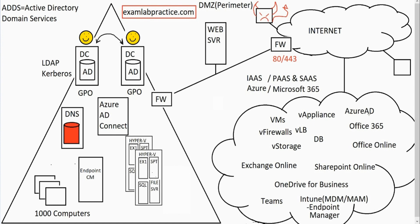When Windows 7 came out, they did introduce a concept known as Direct Access, which was sort of going to replace the idea of a VPN with another VPN scenario. And eventually they kind of gotten away from Direct Access and gone back to just using standard VPNs with a protocol known as IKE, Internet Key Exchange Version 2, which has a lot of really cool VPN-related features.